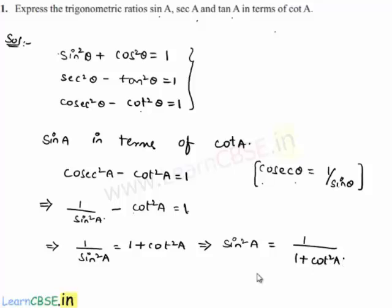Now by applying the square root on both sides, we get sine a is equal to 1 by under root of 1 plus cot squared a.